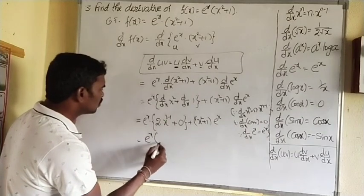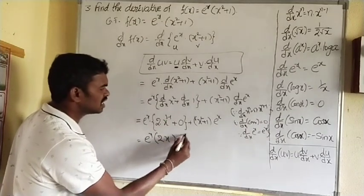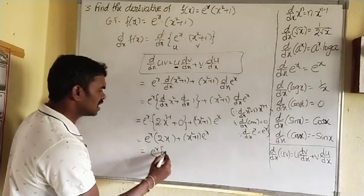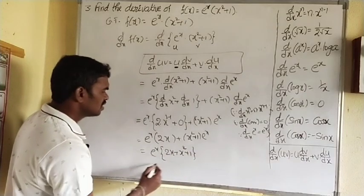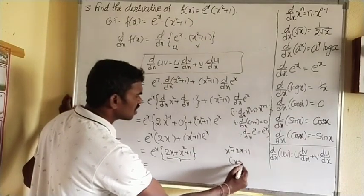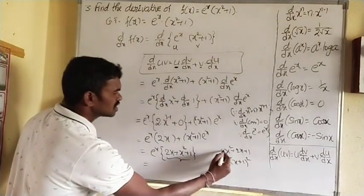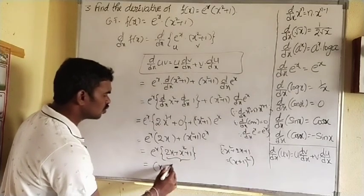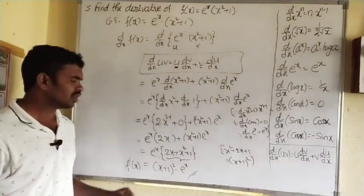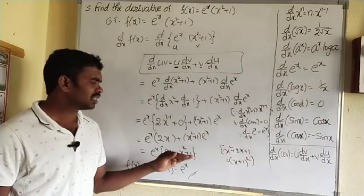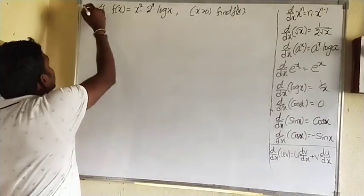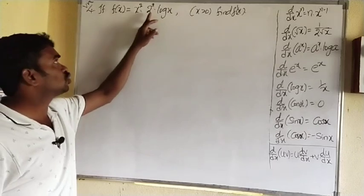We can also extend one more step: e^x·(x + 1)² is the final answer. Next important question: if f(x) = x²·2^x·log x (x > 0), find f'(x). Given f(x) = x²·2^x·log x. There are three terms, so we use the u·v·w formula: d/dx(uvw) = uv·(dw/dx) + uw·(dv/dx) + vw·(du/dx).